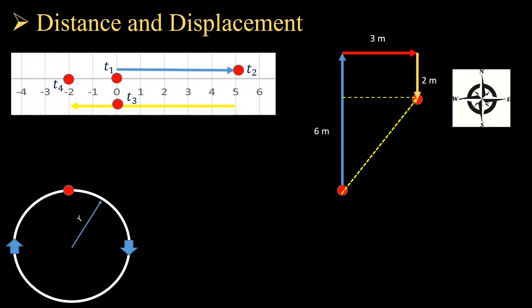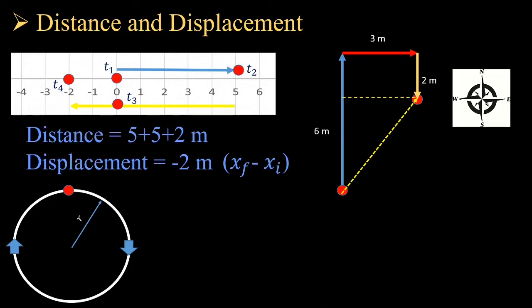In example 1, a particle on a number line starts at the origin at T1, travels 5 meters at T2, returns to the origin at T3, then travels 2 more meters to the left at T4. The total distance is 5 + 5 + 2 = 12 meters. The net displacement is final position minus initial position: −2 − 0 = −2 meters. In one-dimensional cases, the negative sign indicates direction — here, 2 meters to the left.